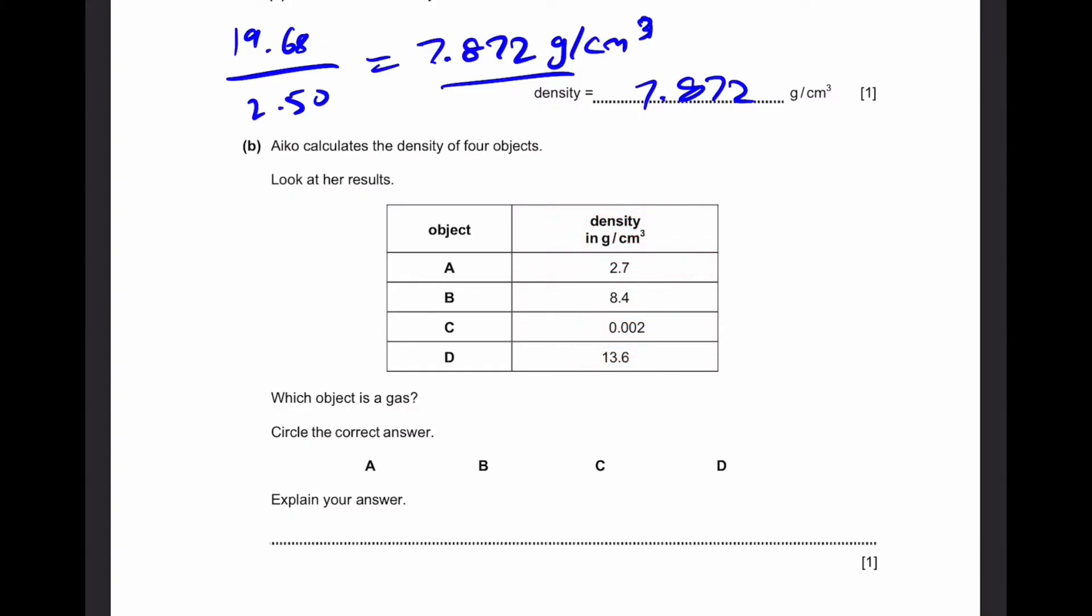And considering that water's density is one gram per centimeter cubed, this is extremely low. So, of course, the answer is C because gases have extremely low densities. This is simply because their mass is extremely small and they can expand to a very large volume. So mass by volume will be a tiny number.